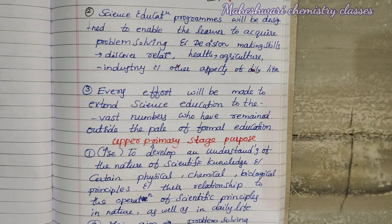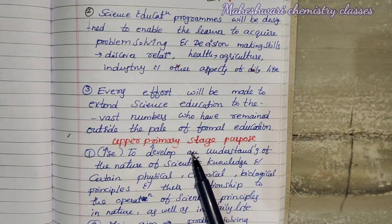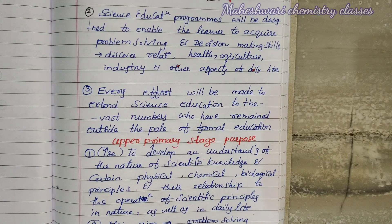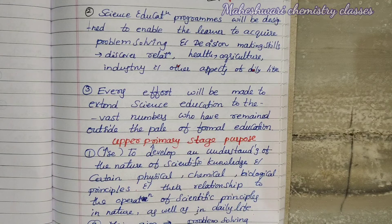Main aim at the upper primary stage, NPE 1986: problem-solving, decision-making, and learning key concepts.